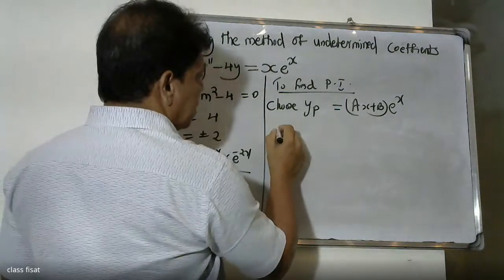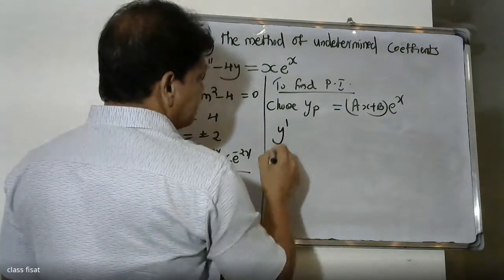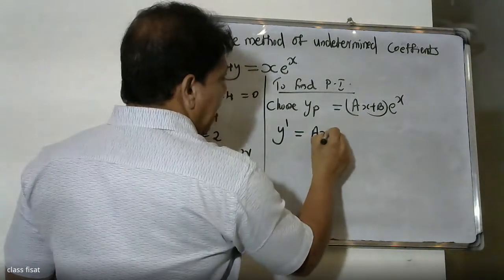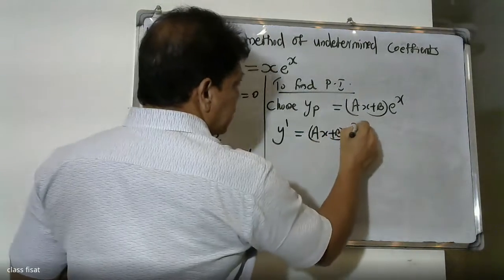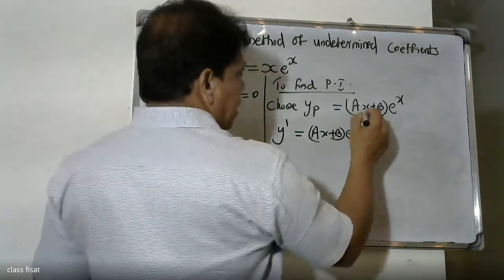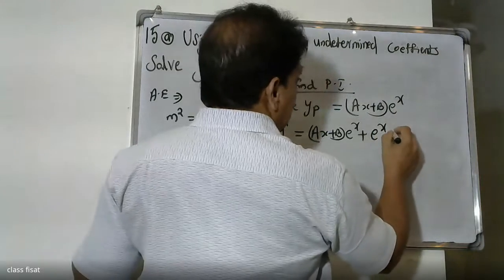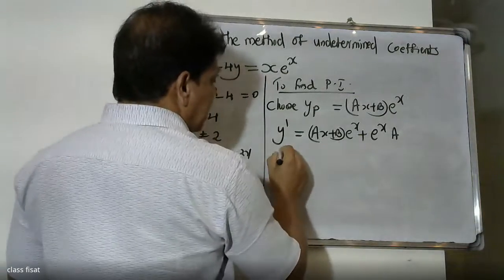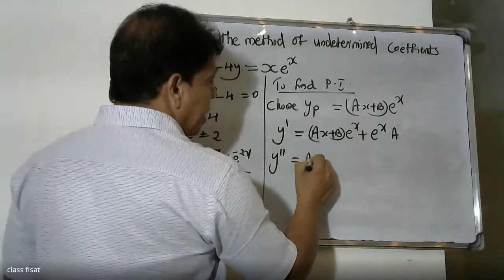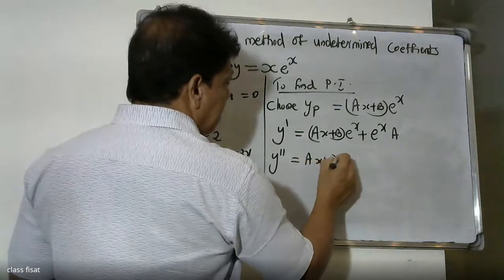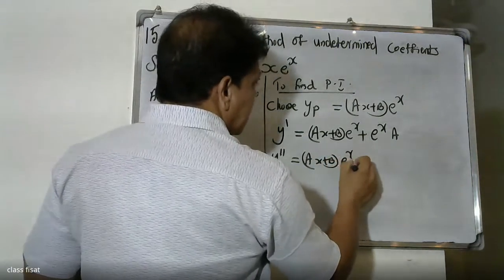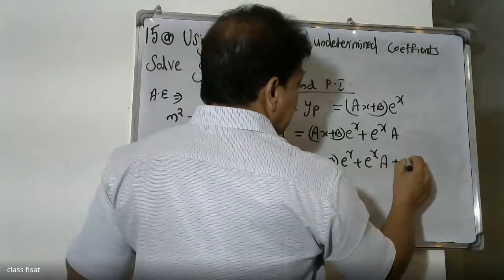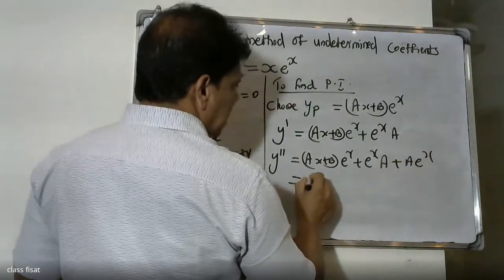This is yp. Now we find the first derivative y dash. Using the product rule: y dash equals ax plus b into e raise to x plus e raise to x into a, which simplifies. Then for y double dash, we apply the product rule again to ax plus b into e raise to x.